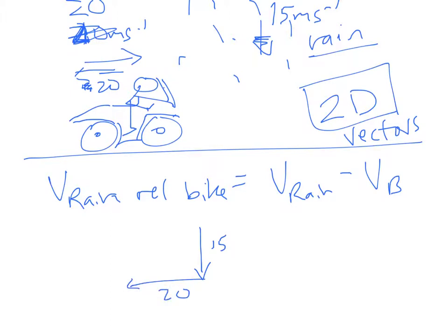So negative velocity of the bike is this way, and therefore the resultant, which is the velocity of the rain relative to the bike, is this part of the arrow down there. I'm not going to label it because it's a very long and clumsy labeling. Okay, and you can find the angle. That's a right angle triangle, of course.